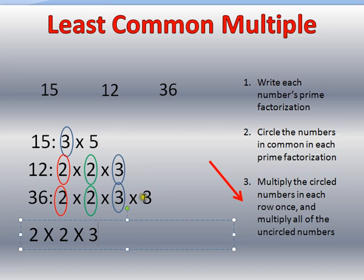Then I multiply my uncircled numbers. In this case, it's 3. And then I have a 5 that's uncircled, too.